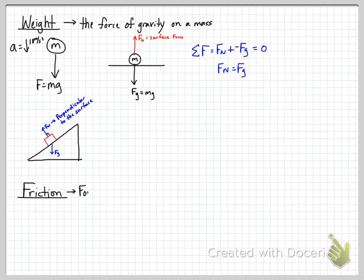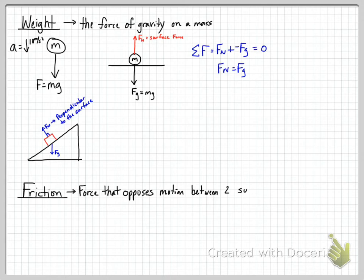The next topic is friction — the force that opposes motion. If you're moving in one direction, friction opposes you in the other. A soccer ball kicked on a field slows down and stops because the grass creates enough friction. Friction is the force that opposes motion between two surfaces in contact.